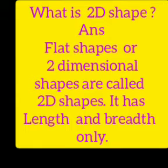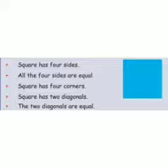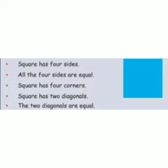It has length and breadth only. Okay, do you understand? Let us see the properties of a square. First one, square has four sides. All the four sides are equal. Square has four corners and it has two diagonals. Two diagonals are equal. These are the properties of square.